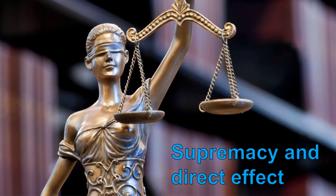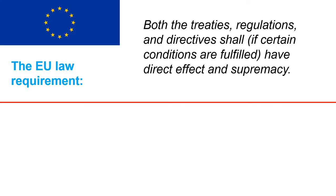Let us spend a few more moments on supremacy and direct effect so that we better understand how these key principles operate across the Union. According to Union law, provisions of the treaties as well as provisions of regulations and directives shall have direct effect in domestic law, provided that the provision in question is clear and unambiguous, unconditional, and that its operation must not be dependent on further action. That a provision has direct effect means that individuals should be able to invoke it directly before domestic authorities, regardless of whether the provision has been transposed into domestic law. Moreover, provisions of Union law have supremacy over conflicting domestic legislation. These two doctrines combined give individuals the opportunity to challenge domestic legislation that conflicts with Union law directly before domestic courts, and this has been a key factor in the development and actual implementation of Union law.